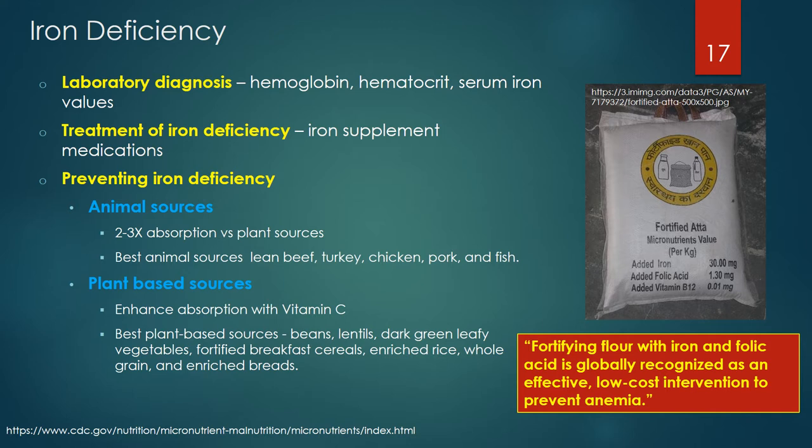Some of the best animal sources of iron are lean beef, turkey, chicken, pork and fish. Some of the best plant-based sources of iron include beans, lentils, dark green leafy vegetables, fortified breakfast cereals, enriched rice, whole grain and enriched breads. Fortifying flour with iron, folic acid and vitamin B12 is globally recognized as an effective, low-cost intervention to prevent anemia.